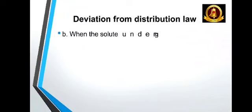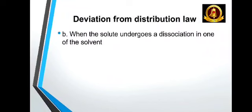When the solute undergoes a dissociation in one of the solvents, that is Kd is equal to C1 divided by C2 into 1 minus alpha.